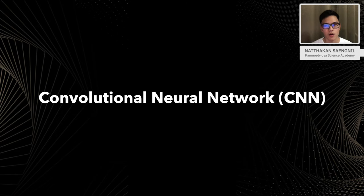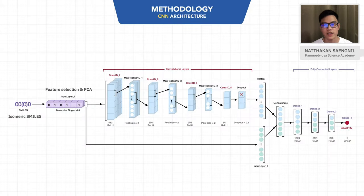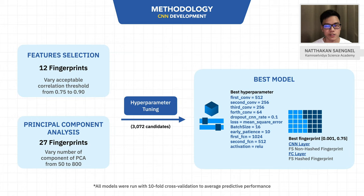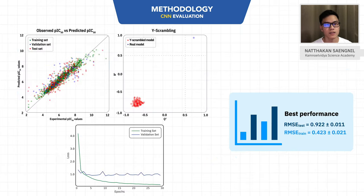Next is the convolutional neural network or CNN algorithm. For CNN and CSGN, we use PyTorch as a framework. This figure illustrates the CNN algorithm structure, which contains convolutional layers and fully connected layers. Different fingerprints were used as input to each layer. We used 12 fingerprints from the feature selection technique and 27 fingerprints from the PCA technique as input in each layer. This slide shows our best results with the CNN algorithm. The loss curve is a plot between training loss and validation loss versus epoch. It can be seen that the validation loss does not increase when the training loss decreases, so the model was not overfitting.